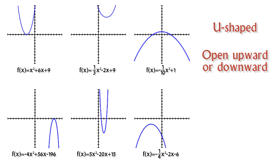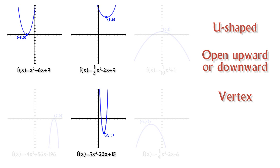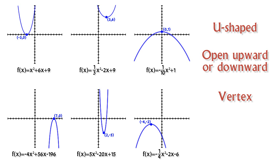Next, each parabola has a vertex. The vertex of a parabola is like a turning point where the graph of the parabola sort of changes direction. For parabolas that open upward, the vertex is the point where the graph goes from being a decreasing function to being an increasing function. It's also the minimum point on these graphs.